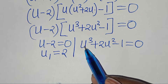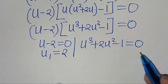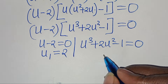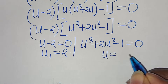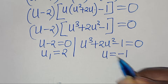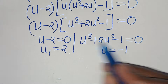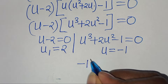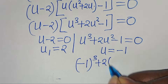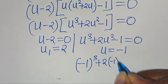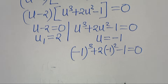To solve the cubic function, we can use the rational root theorem. Let's check u equal to minus 1. Substituting minus 1, we have (minus 1) to the power of 3, plus 2 times (minus 1) squared, subtract 1, this is equal to 0.